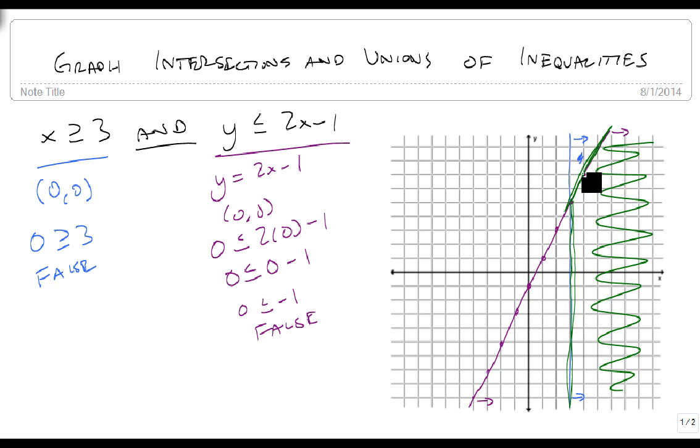The answer is this region and only this region. Because this region is only shaded by one, this region is only shaded by one, and this region isn't shaded at all. This is the only region shaded by both. And that's how we shade an intersection.